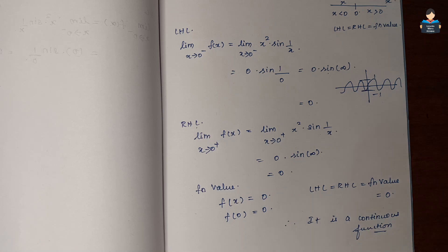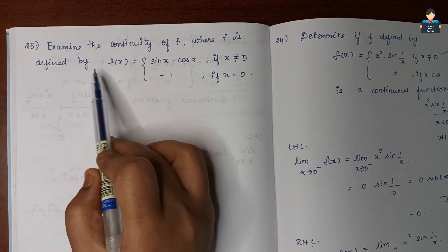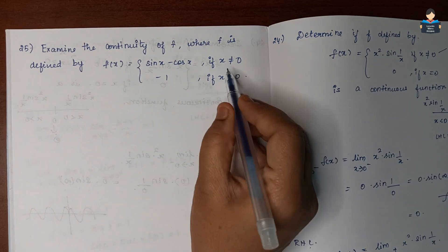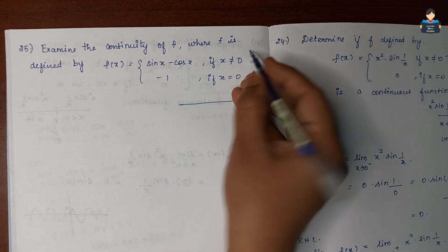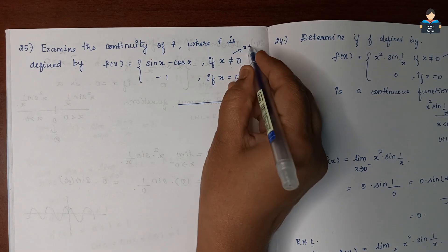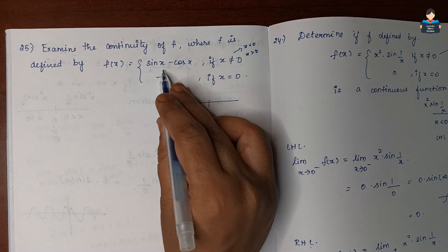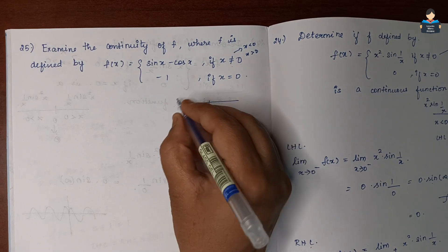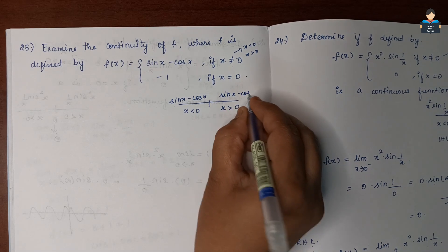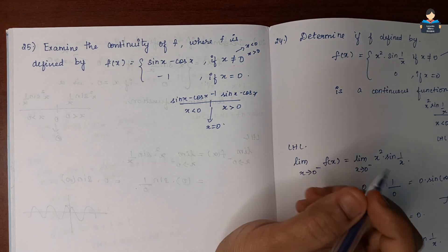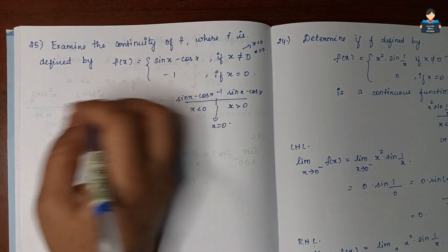Now Question 25: Examine the continuity of f, where f is defined by f(x) = sin x − cos x for x ≠ 0 (both x < 0 and x > 0), and f(0) = −1. We check LHL, RHL, and the function value.